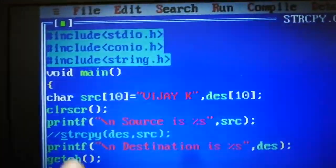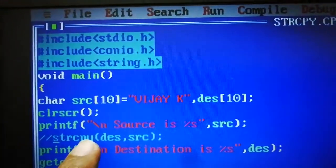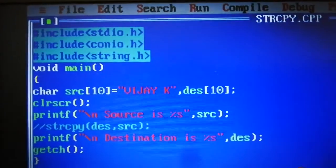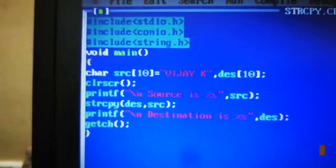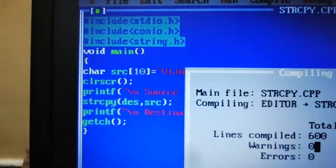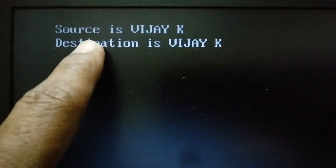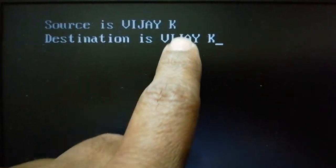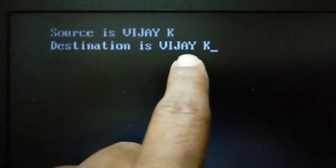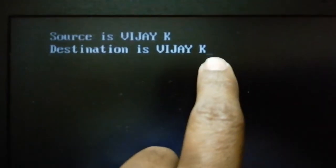Let me see with this statement. Now what happened - source is 'VIJAY K' and destination is 'VIJAY K'. This is the way that value will be copied from source to destination.